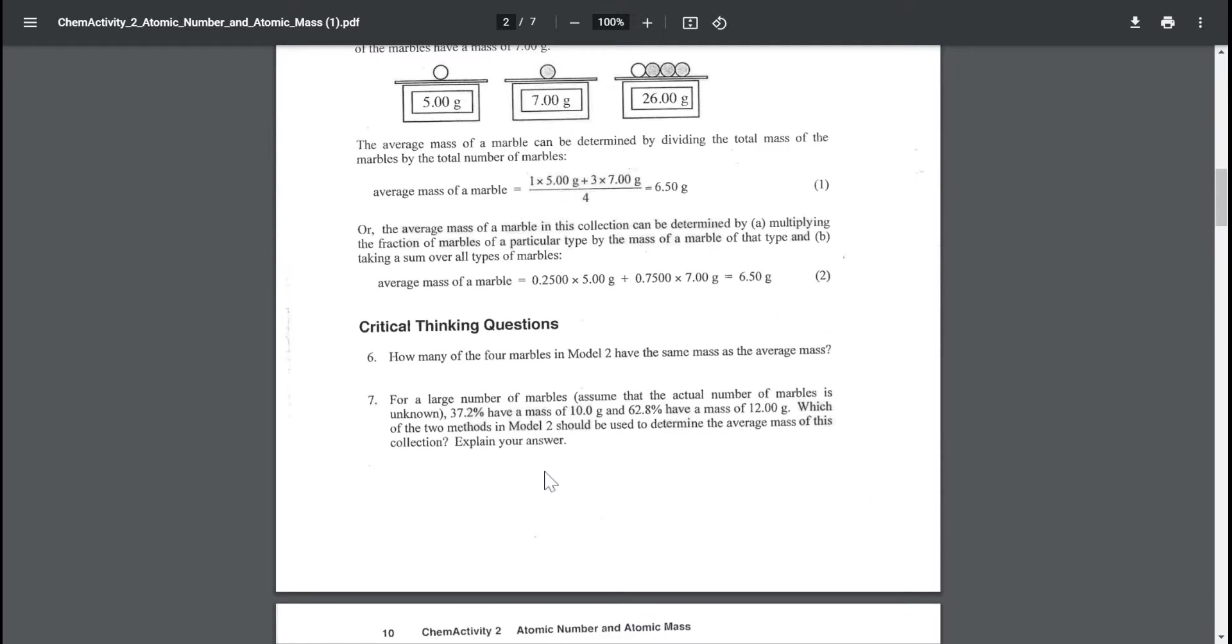When they ask which method should I use, this one or this one? Well, you see, in the question itself it's given in percent. I have 37.2% and 62.8%. It doesn't give you how many marbles I have, it's in percentage. So of course, I have to use this method right here, which goes by percentage.